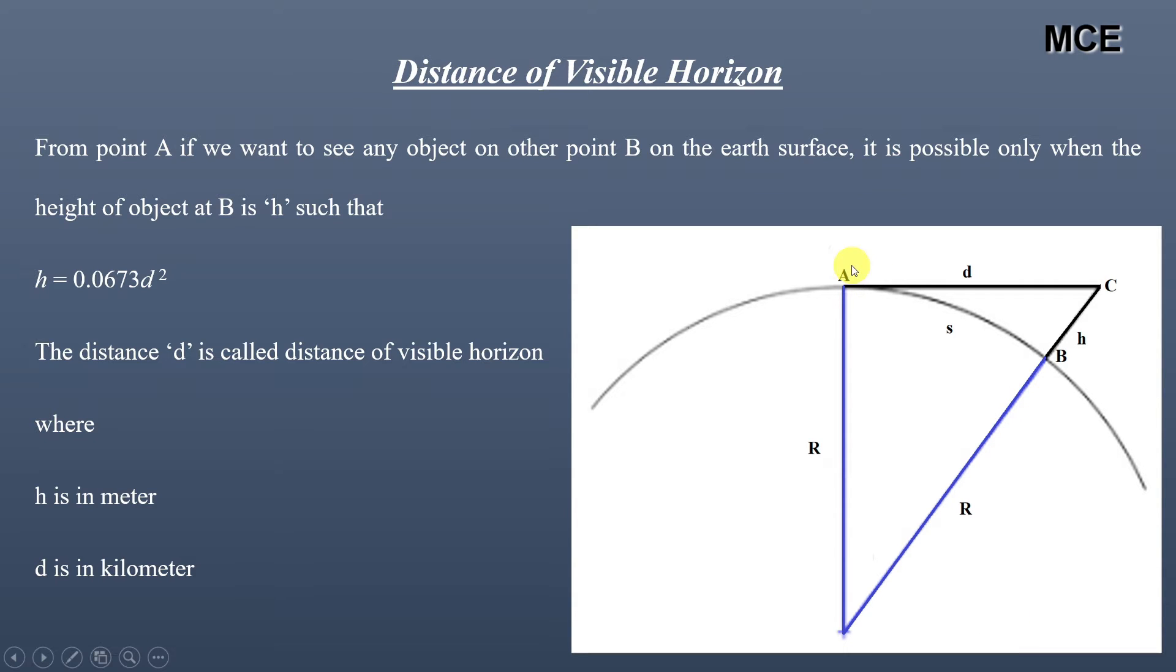Suppose a person standing at point A on the surface of earth wants to see an object at point B on the earth's surface. This is only possible when the object at point B has a height h given as h = 0.0673 d². This distance d is called the distance of the visible horizon. Height h is taken in meters and distance d is taken in kilometers.